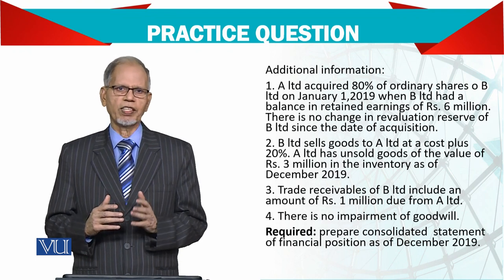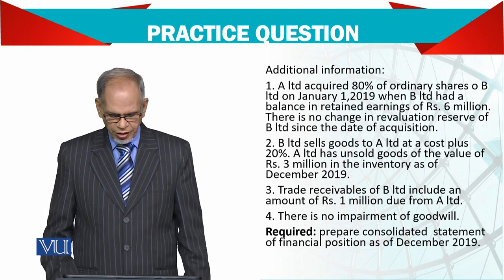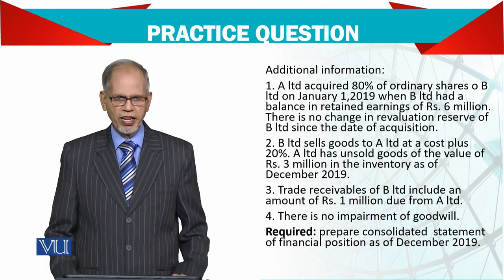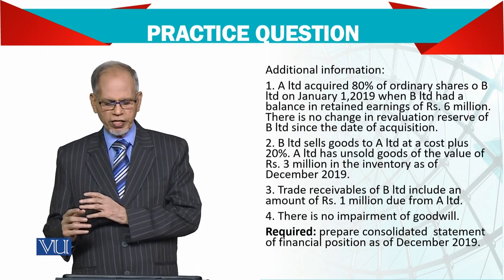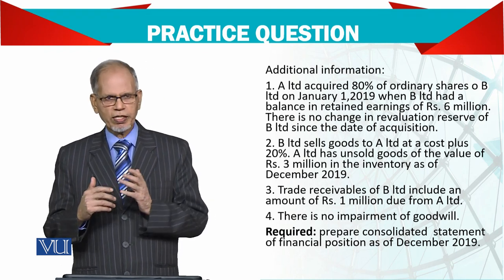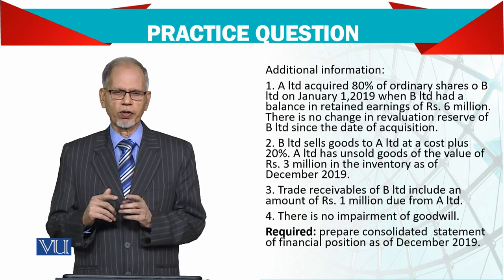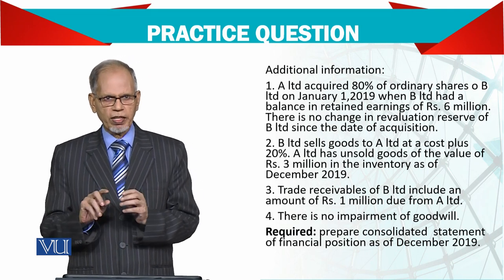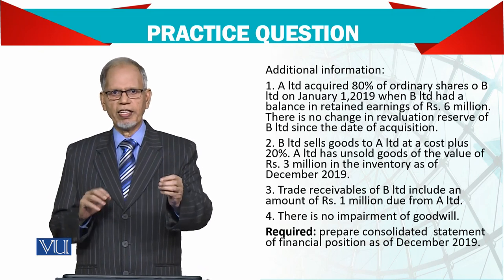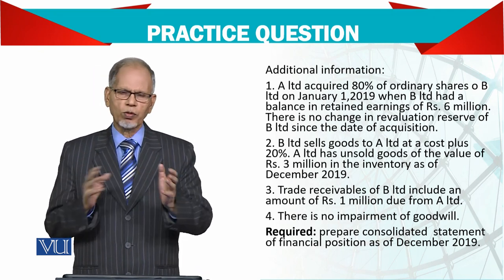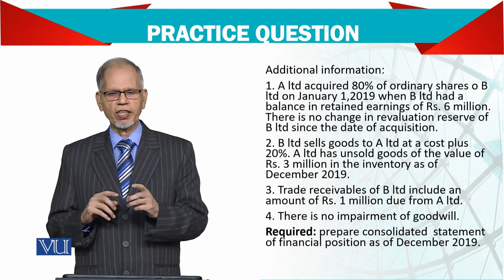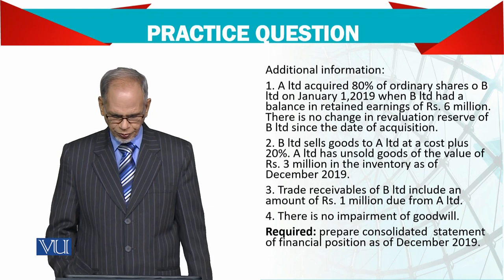Trade receivables of B Limited include an amount of 1 million due from A. Since B has shown it as a receivable and A has shown it as a payable, both need to be cancelled. This cancellation process is straightforward — both the receivables and payables (debtors and creditors) will be adjusted and eliminated against each other.